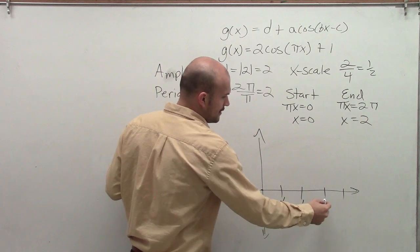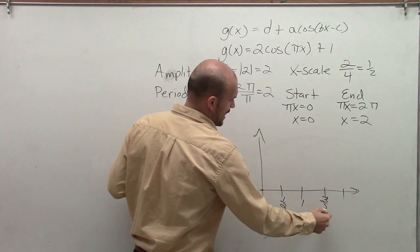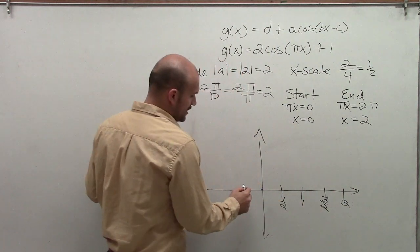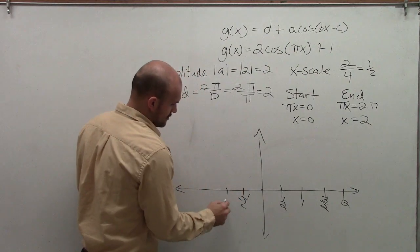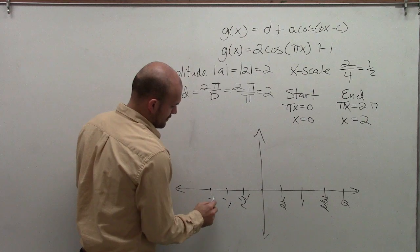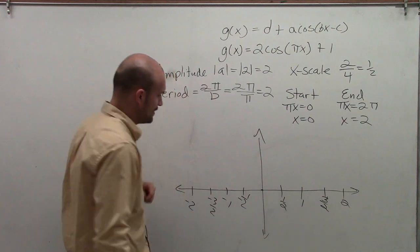The next critical point will be at 1, then at 3 halves, and then at 2. I can also do this in the negative direction, since I'm starting at 0.